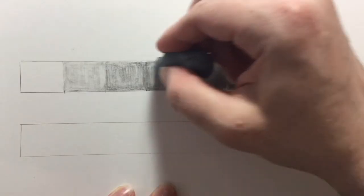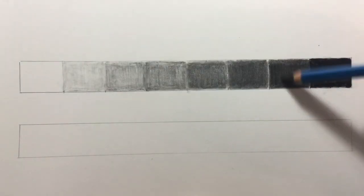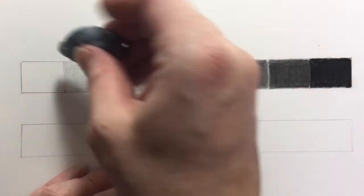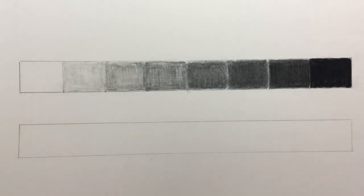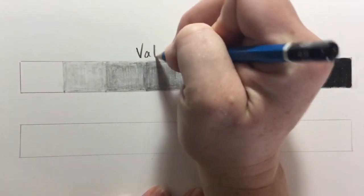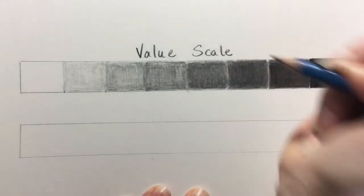Now I'm going to alter the right side of the value scale and just make that box a little bit darker. I use my kneaded eraser to clean it up, and then there you have a nice value scale.